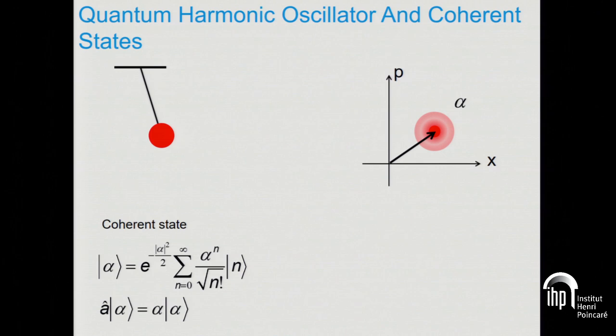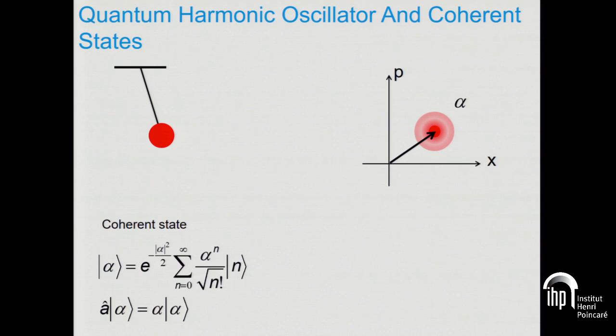What is the cat code? If you take a quantum harmonic oscillator — you can think of a pendulum with a small angle around its vertical axis — its states can be represented in the XP plane, or the Fresnel diagram if you're more familiar with optics. A classical oscillation, its quantum counterpart, is a coherent state alpha, which can be decomposed as a sum over Fock states — states with a specific number of photons in the oscillator — with a Poisson distribution. The key point is that the coherent state alpha is an eigenstate of the annihilation operator with eigenvalue alpha.